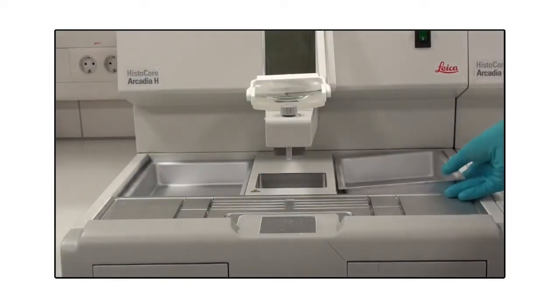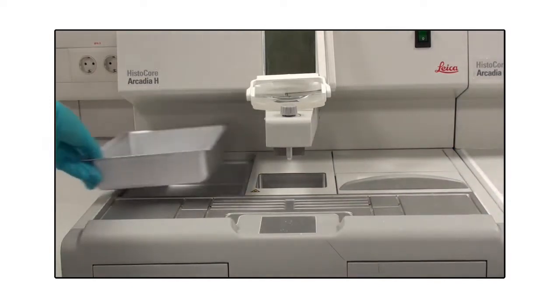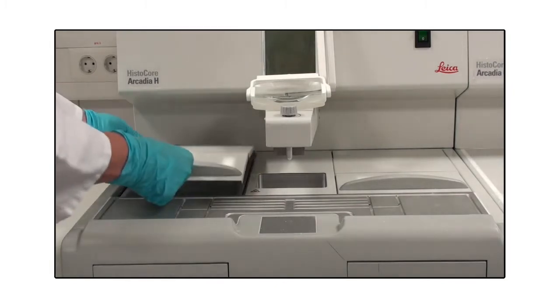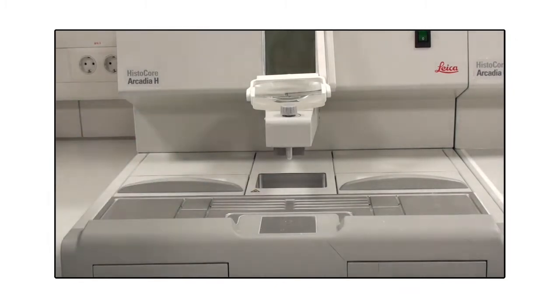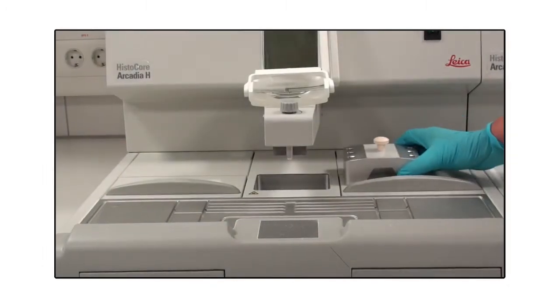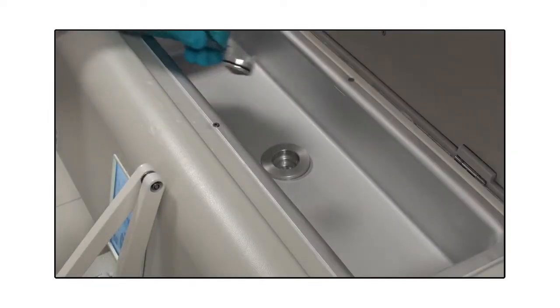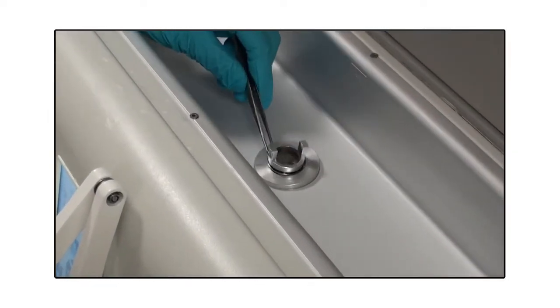Install the embedding mold tray and the cassette tray and close the trays with the corresponding lids. Depending on your preferred working direction, the two heated trays can be used for molds or cassettes. Insert the forceps holder that can hold up to six forceps. Then insert the paraffin filter holder into the outlet hole inside the paraffin tank. Check that the black O-ring seals the hole. Now connect Arcadia H and C to the power supply.